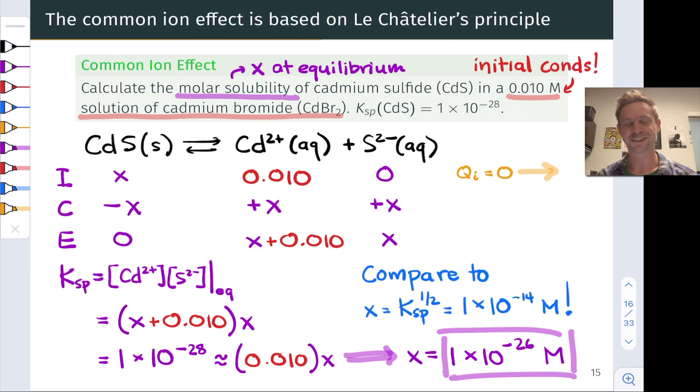Absolutely mind-boggling common ion effect at a concentration of cadmium that seems pretty innocent at 0.01 moles per liter. We see a massive decrease in the solubility of cadmium sulfide in that cadmium solution.